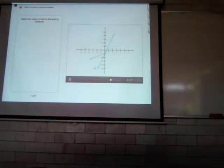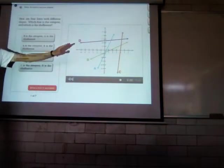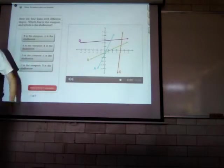Here are four lines with different slopes. Which line is the steepest, and which is the shallowest? Tenemos cuatro líneas de diferentes pendientes. ¿Cuál es la línea con la mayor pendiente y cuál es la pendiente? B sería la inclinación, steep sería la más inclinada, shallow sería la más plana.